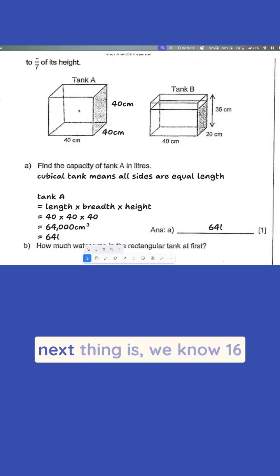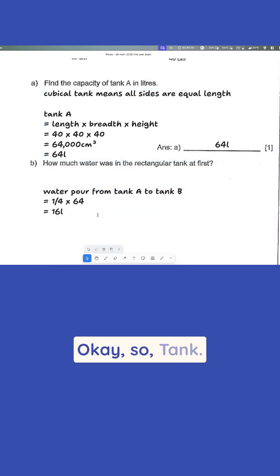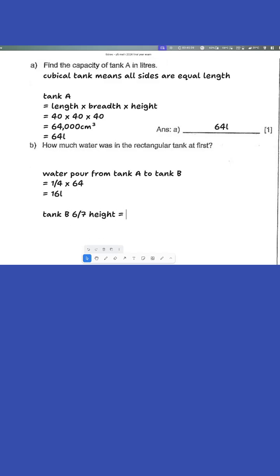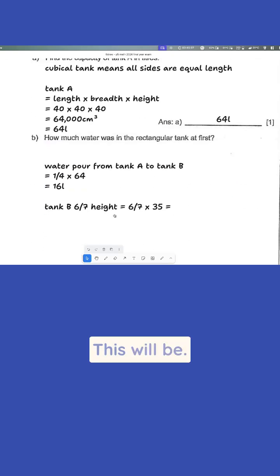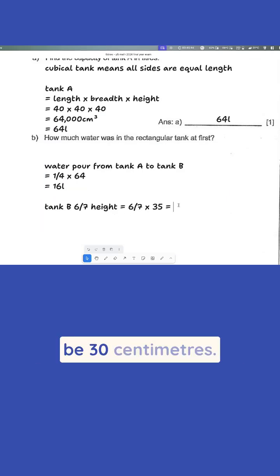Okay, so in this case, next thing is we know 16 liters has been poured. After this, the new water level in tank B rose to 6/7 of its height. Okay, so tank B is equal to 6/7 height. B is equal to 6 over 7 times 35. In this case, this will be 6 over 7 multiplied by 35, this will be 30. Okay, 30 centimeters.